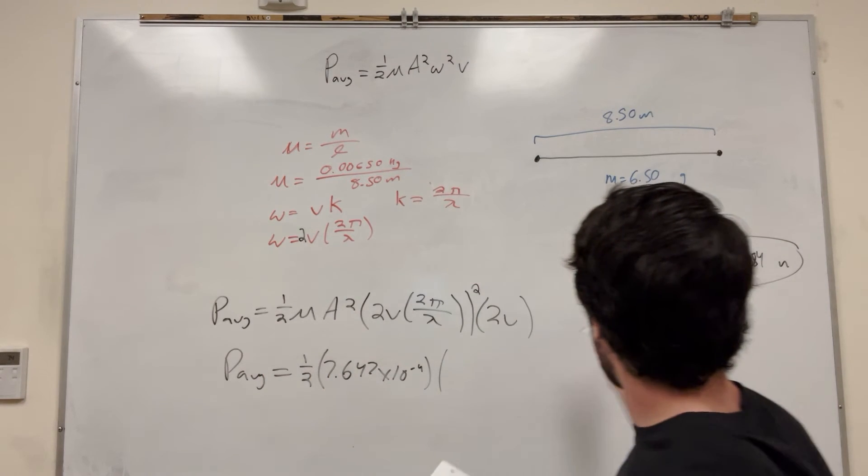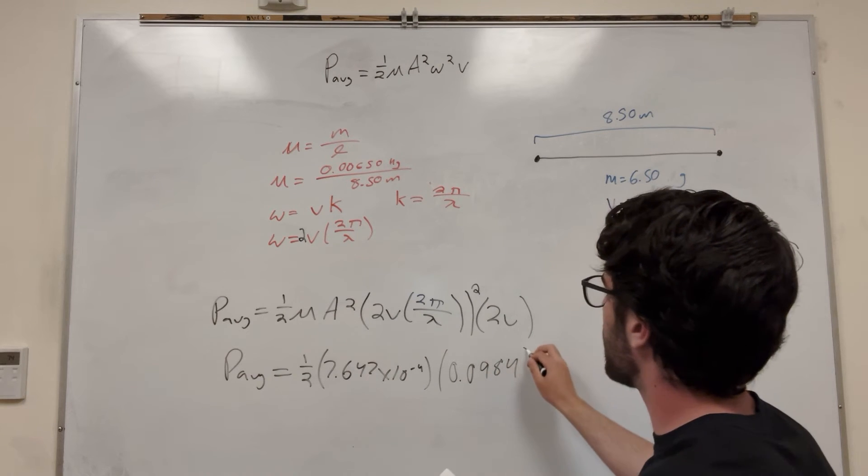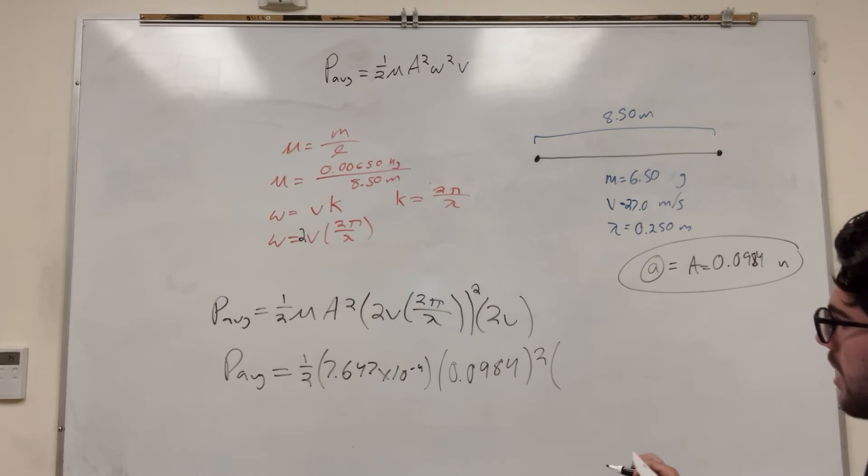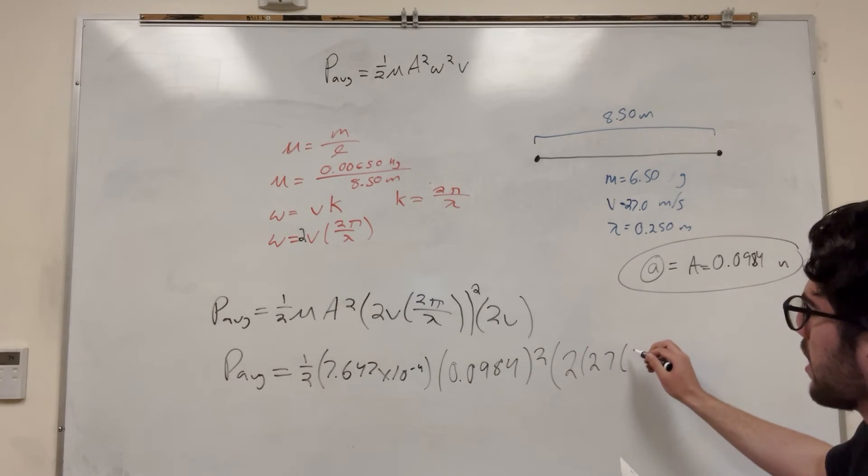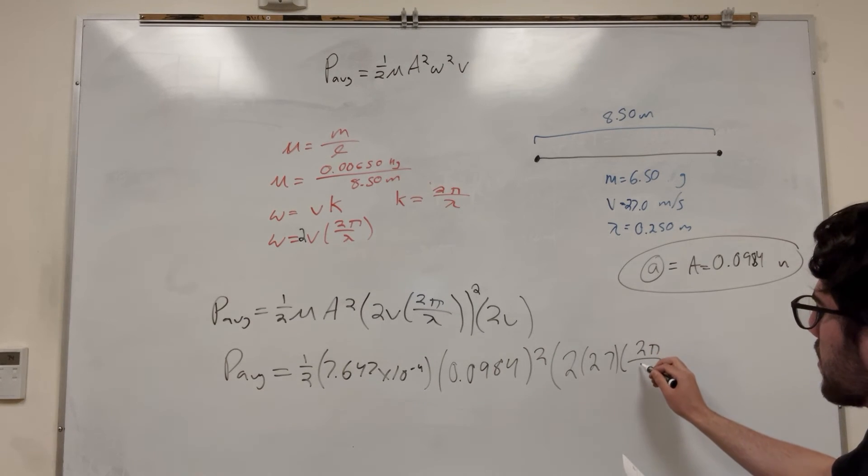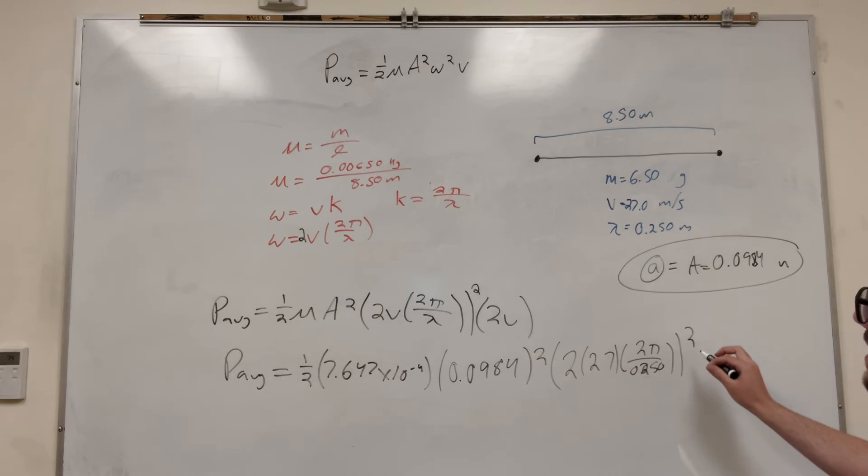So this amplitude is what we found here, 0.0984, square that. Times 2 times the velocity 27, times 2 pi over lambda which is 0.250, square all of that. And then again multiply it by 2 times 27.